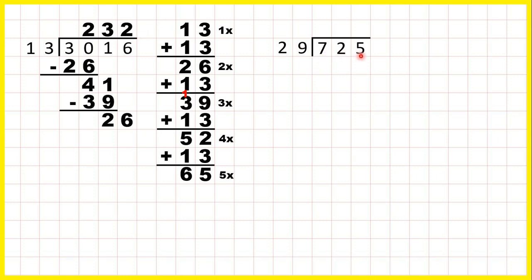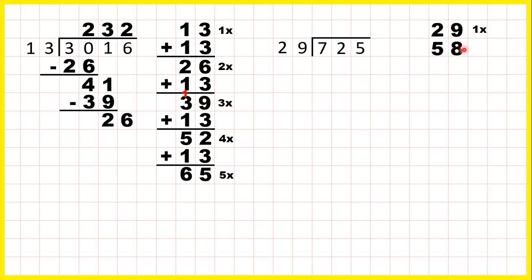Now 725 divided by 29. So we need our 29 times table. 29 is 1 times. Rather than adding 29, it's probably easier for us to add 30 and then subtract 1. So if we add 30 that would be 59, subtract 1 is 58 for 2 times. Then we can do the same thing for 3 times, 4 times, and 5 times.